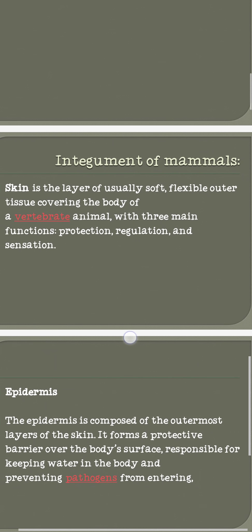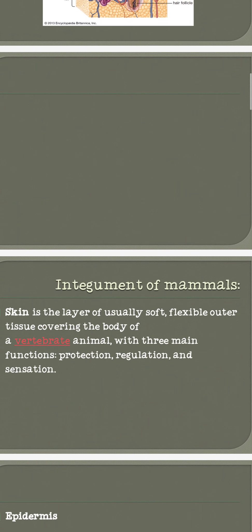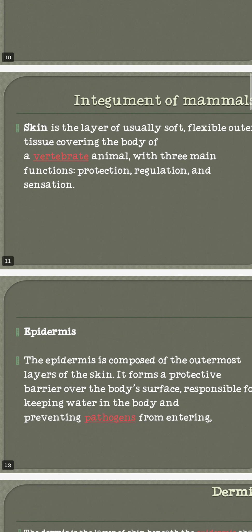The integument of birds is similar to that of reptiles — their skin structures are essentially the same. The main difference is that birds have feathers covering their whole body instead of scales. Other body structures and glands are similar to those discussed in reptiles.